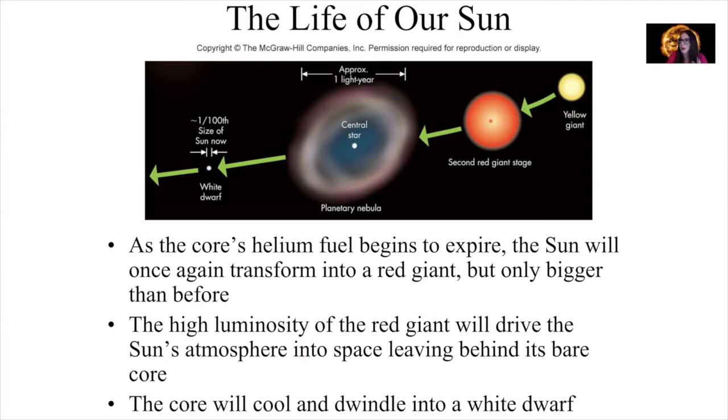And then the very high luminosity of the red giant will drive the sun's atmosphere into space, leaving behind its bare core. And so this kind of expulsion of its outer layers, its outer shell, creates what we call a planetary nebula. Now some astronomers don't think our sun will have a planetary nebula, but generally this is the expected way that the sun might go. It's going to have to puff up some of its outer layers anyway. And then what would be left over is the core, which we call a white dwarf. And that core will cool and dwindle into a white dwarf over time. So after the sun has expelled its outer layers in this sort of planetary nebula stage, we'll have this beautiful cloud surrounding what was once the sun's core. Then we'll have left over the white dwarf, which is the remainder of the sun's core. And that white dwarf will be about one one hundredth the size that the sun is right now.